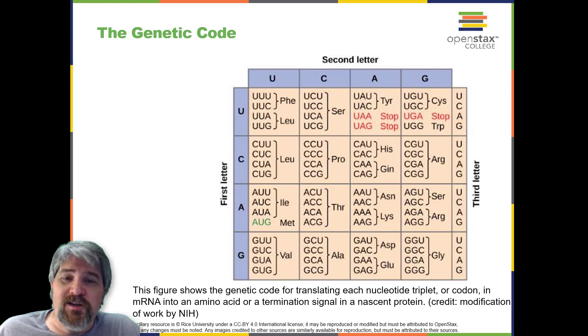Three of these 64 codons terminate protein synthesis and release the polypeptide from the translation machinery. These triplets are called stop codons.